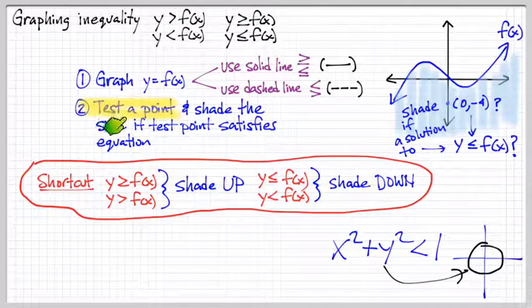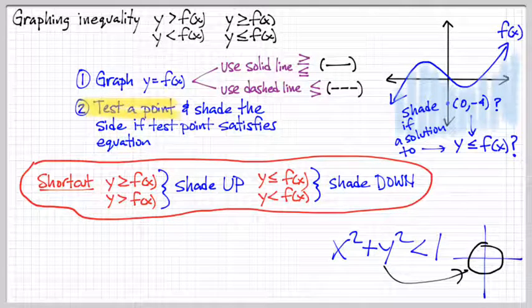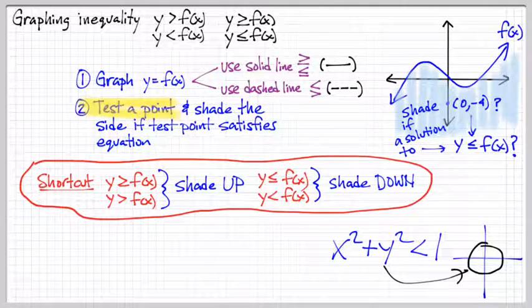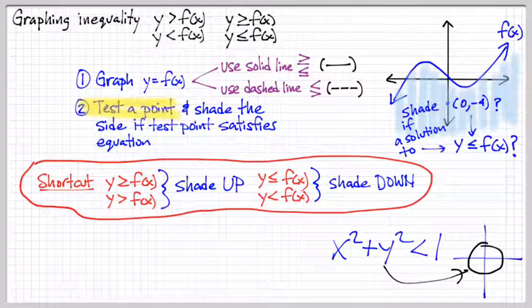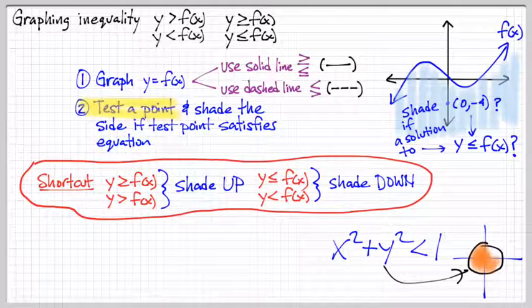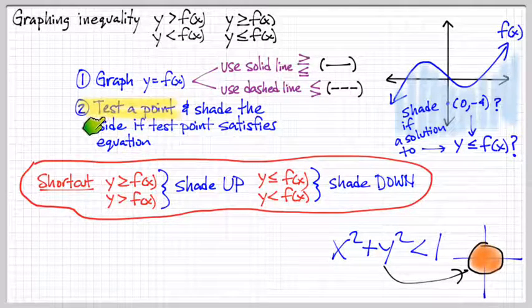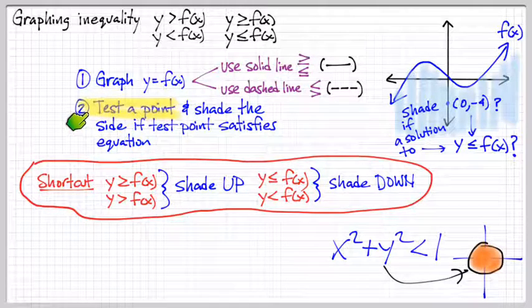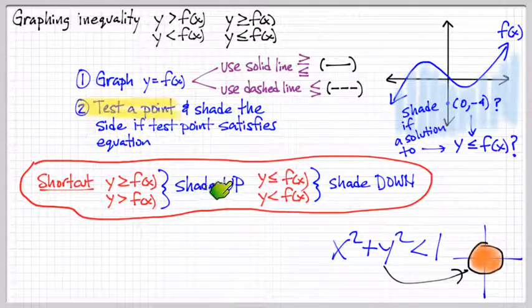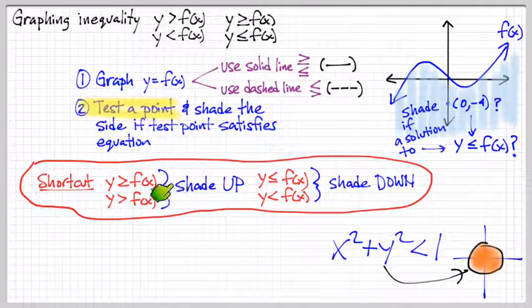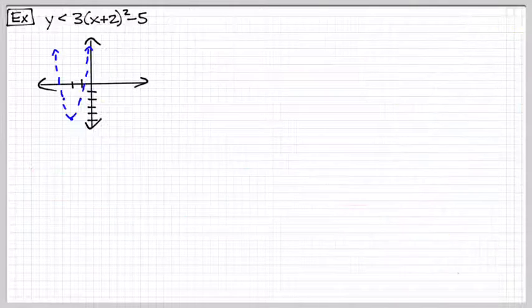And so, the idea of taking a test point, take 0, 0, plug it in, and if it's true, you shade. If I plug in 0, 0, I get 0 plus 0 is 0, which is less than 1. So, my test point of 0, 0 is true. So, I shade everything inside. So, that's why this test point idea, to me, is more fundamental. It's more of a concept that can be used everywhere. Whereas, this shading up, shading down, less powerful, and you could forget it easily, or you can actually mistakenly do it backwards.